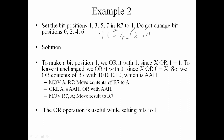In our case the bit pattern is: 1, 1, 0, 0, 1, 1, 0, 1 — and the result row gives: 1, 1, 1, 1, 1, 1, 1, 1.